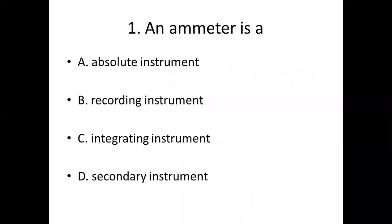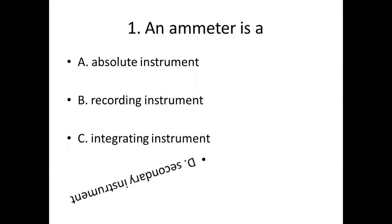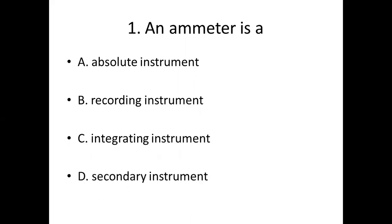First bit. An emitter is: Option A, Absolute Instrument. Option B, Recording Instrument. Option C, Integrating Instrument. Option D, Secondary Instrument. Answer: Option D, Secondary Instrument.